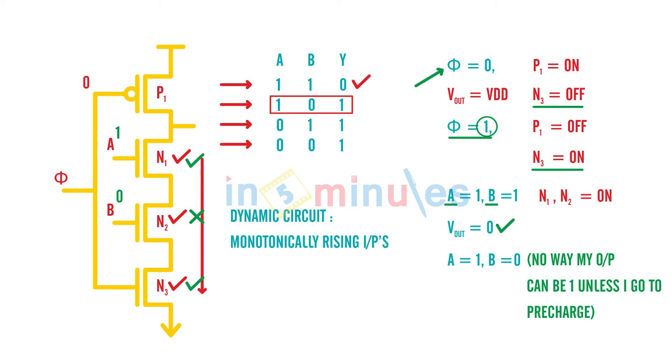What's going to happen is just imagine that this dynamic circuit is driving some other block who needs a 1 to be triggered. Now what's going to happen is if A is 1 and B is 0 in the evaluate phase, and my output was initially discharged because it cannot produce a 1 now unless you go back to the pre-charge phase, this circuit cannot be triggered.